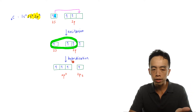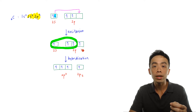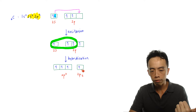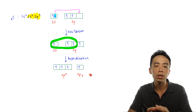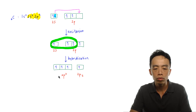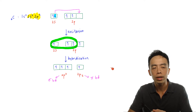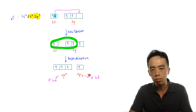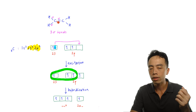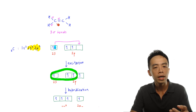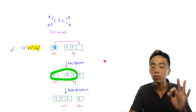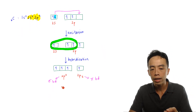Each sp2 hybridized orbital contains one electron and will be used to form a sigma bond. The remaining 2pz orbital is not involved in hybridization — it is carried forward and will be involved in pi bond formation. So for sp2 carbon, we expect three sigma bonds formed by sp2 orbitals and one pi bond formed by the remaining p orbital. Looking at ethene carbon: one sigma bond with hydrogen, another sigma bond with hydrogen, another sigma bond with carbon, and one pi bond with the other carbon — exactly three sigma bonds and one pi bond.